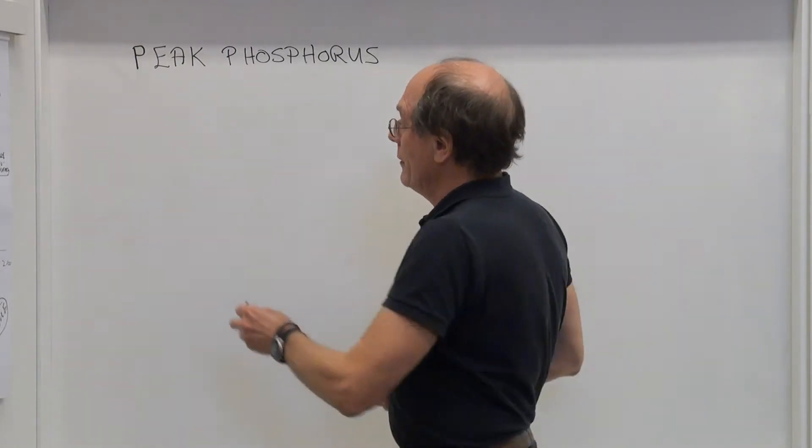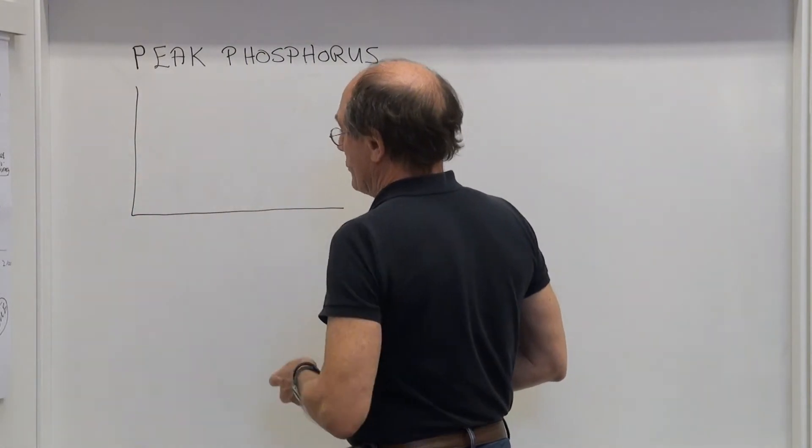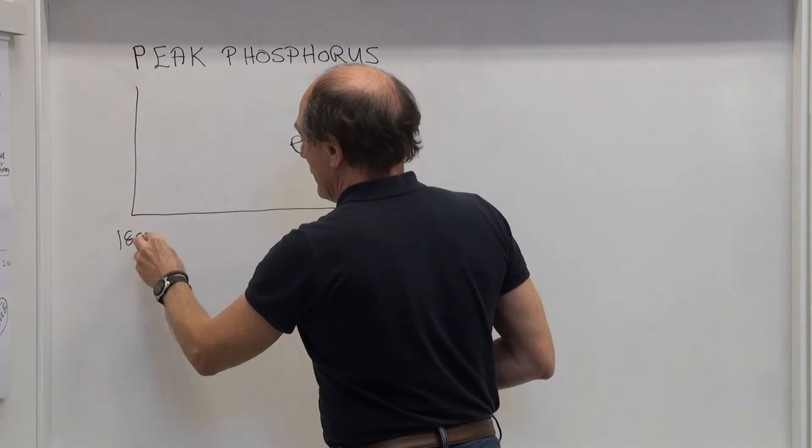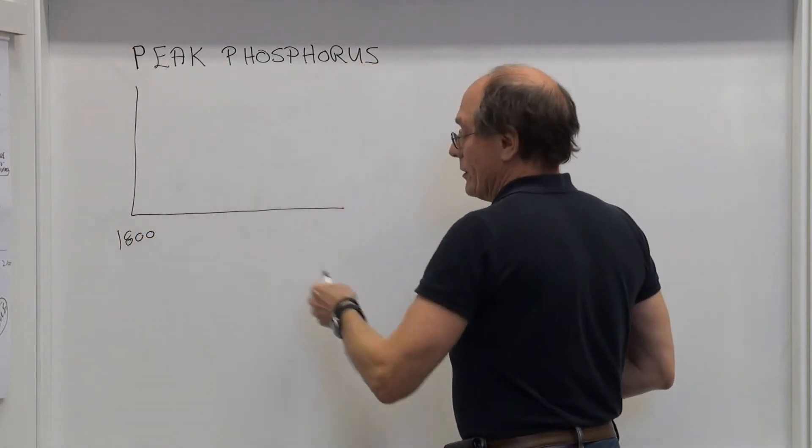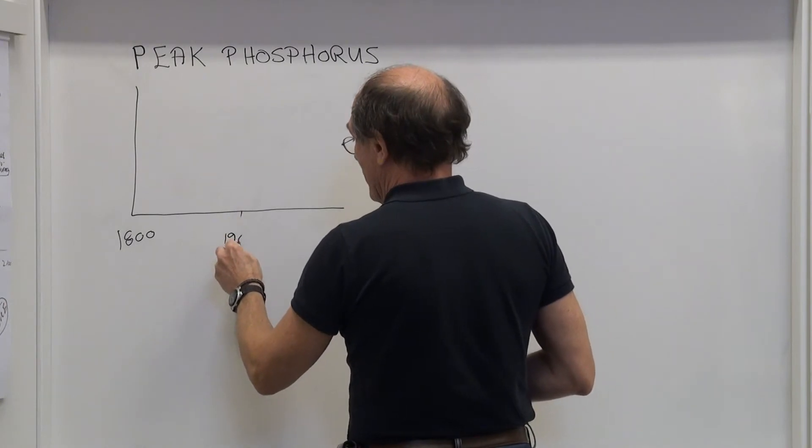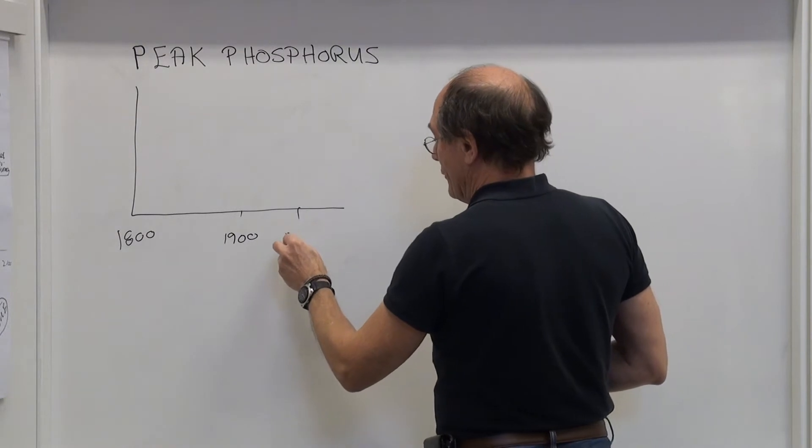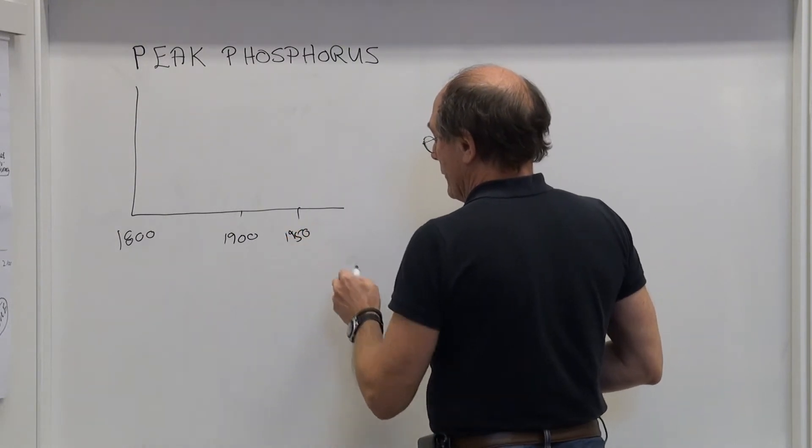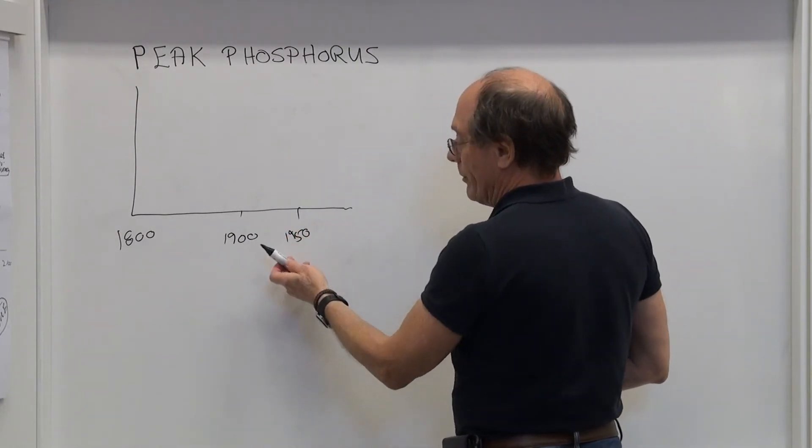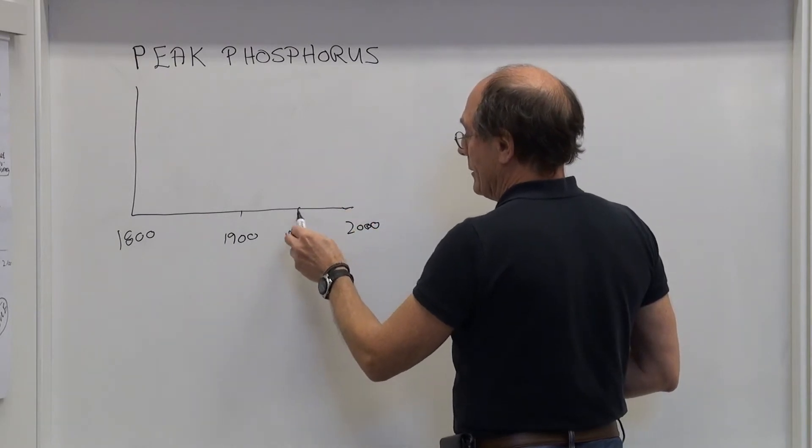If we look at the trend of how this resource has been extracted, if we go back to 1800 when the population is very low on the planet, to 1900, we're still less than a billion. 1950, so we're talking about a population of 2.5 billion, and then today we're at 7 billion.